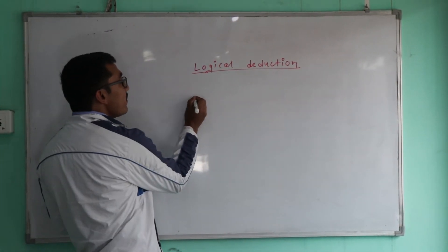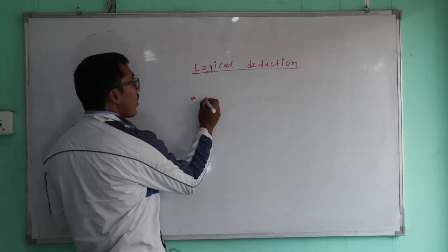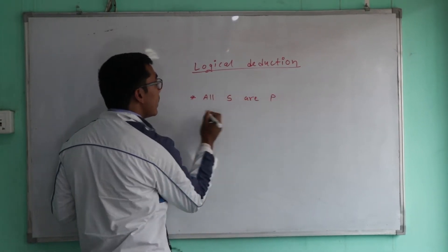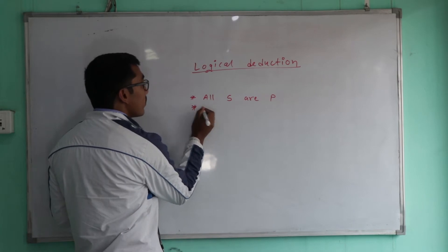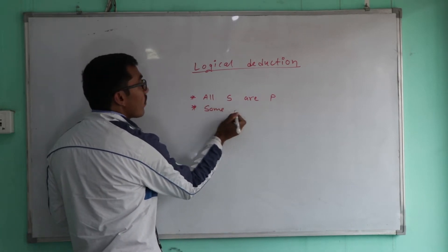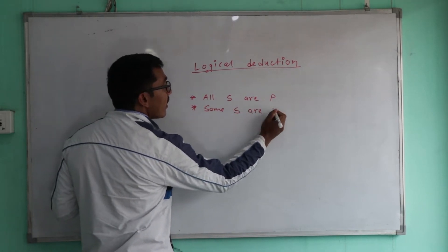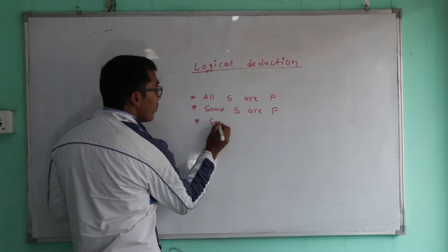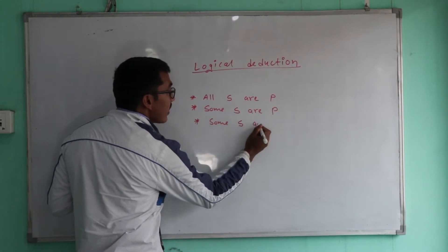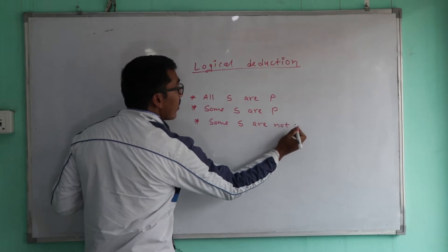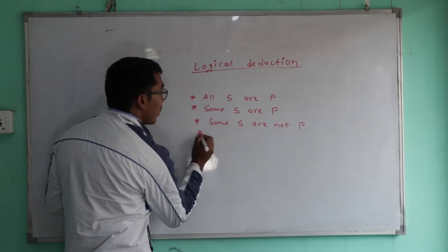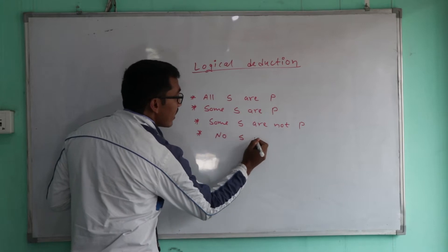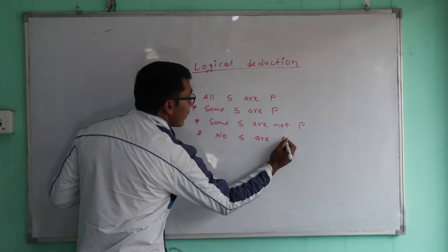There are four basic types of categorical statements. The first is: All S are P. The second is: Some S are P. The third is: Some S are not P. And the fourth is: No S are P.